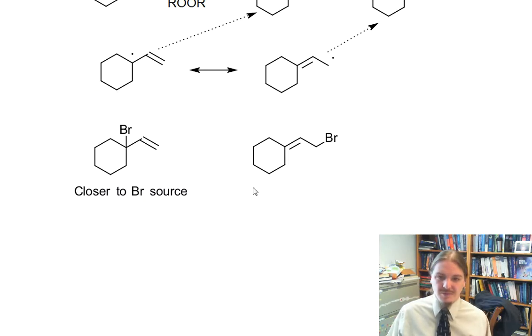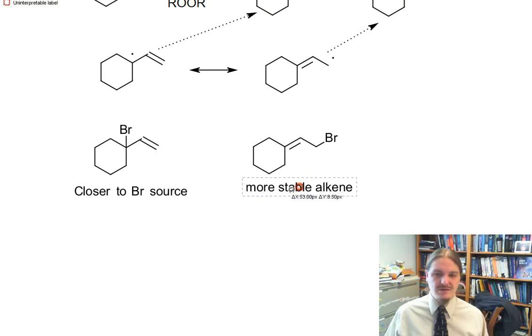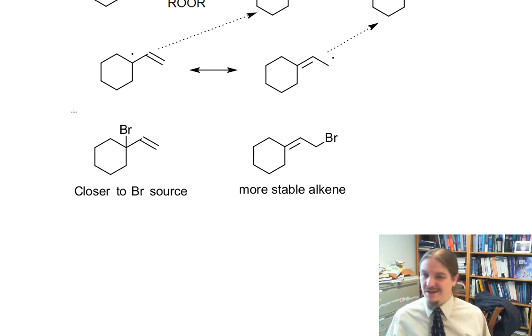The other compound might be the major product because it is a more stable alkene. And so there's more than one consideration actually to think about. Like I said, I don't really have a good way to tell you which one of these is going to end up being the major product, but they're both possible.